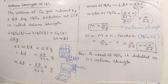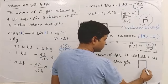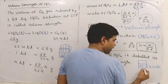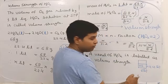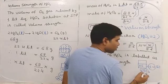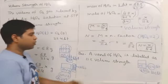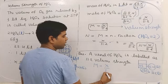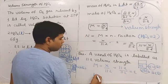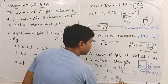Consider a question: a vessel of H2O2 is labeled as 11.2 volume strength. This means if we take 1 liter from this container and place it at STP, 11.2 liters of oxygen gas is released. To find molarity: Volume strength / 11.2 = 11.2 / 11.2 = 1 M. To find normality: x / 5.6 = 11.2 / 5.6 = 2 N.